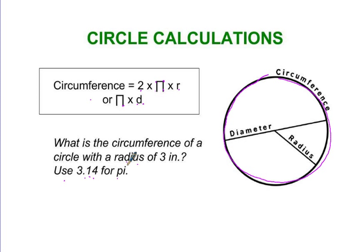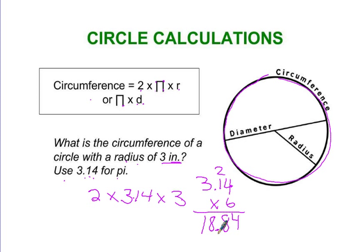They're giving us the radius here, so let's go ahead and do 2 times 3.14 times 3 inches, because that's the radius, and 2 times 3 is 6, so I'm actually doing 3.14 times 6. 4 times 6 is 24, carry the 2. 1 times 6 plus 2 is 8. 3 times 6 is 18, so the answer is 18.84.